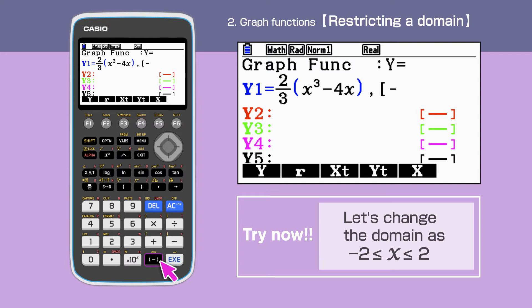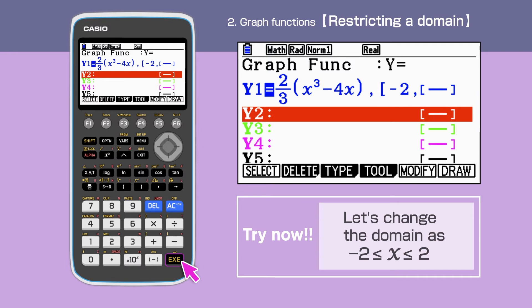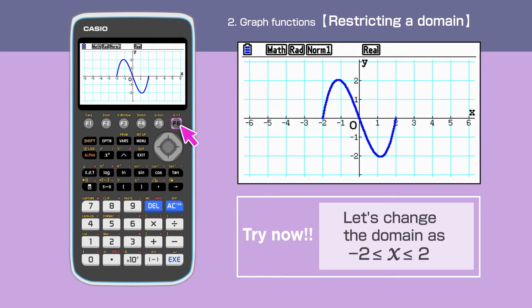Minus 2. Comma. 2. Close the bracket. We need to use the bracket minus negative key for the negative 2, not the subtract key. Press F6. Now we have drawn the graph with the domain.